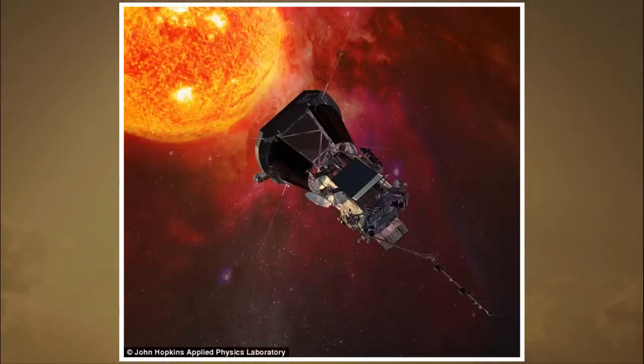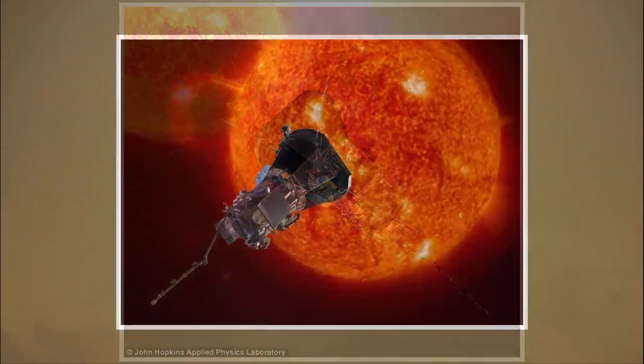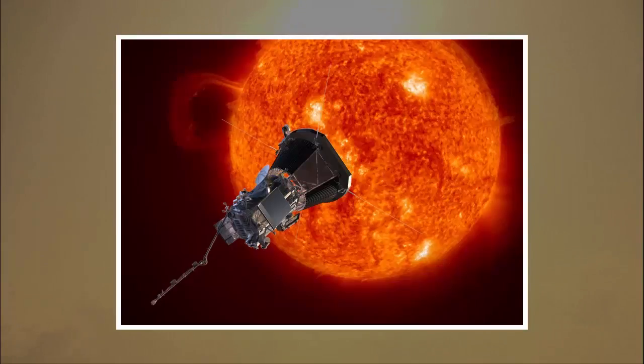NASA is set to announce new details on its radical mission to fly directly into the sun's atmosphere. The plan, dubbed Solar Probe Plus, will see a spacecraft launched from Earth in the summer of 2018 to reach an orbit within 4 million miles of the sun's blazing hot surface.